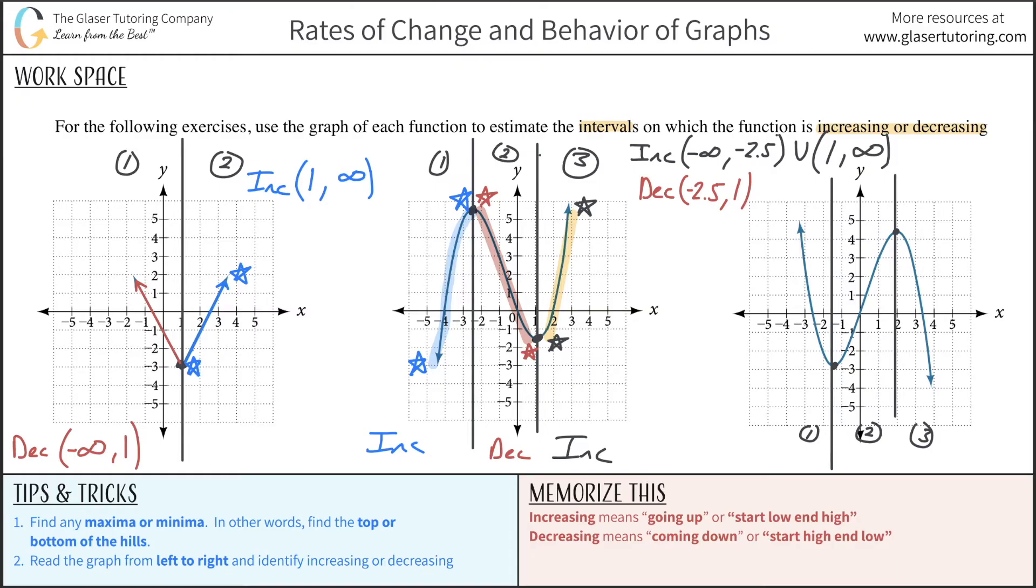Here on this side we are starting high and we're ending low. So this is going to be a decreasing section. In the middle, we're starting low, ending high. So that sounds like it's an increasing section to me. And then last but not least, we're starting high, ending low. It sounds like that's a decreasing part. So we have two decreasing intervals, one increasing interval.